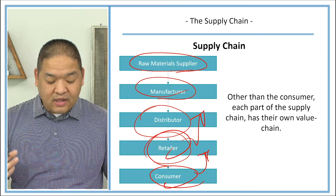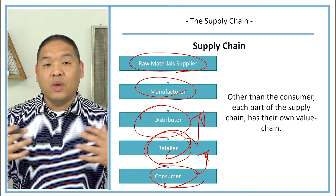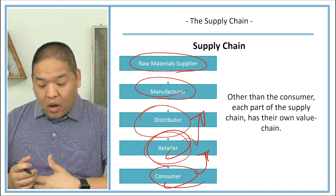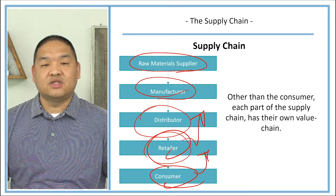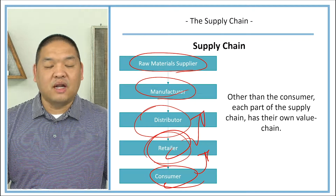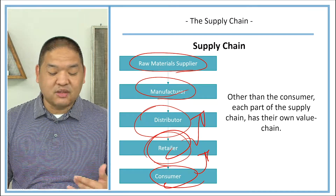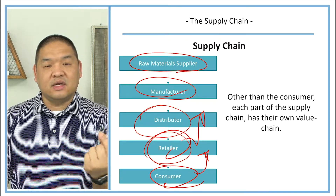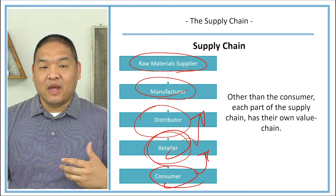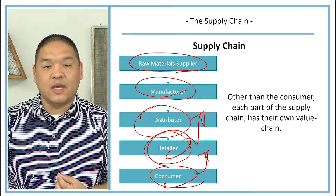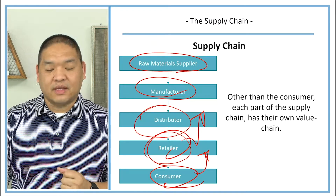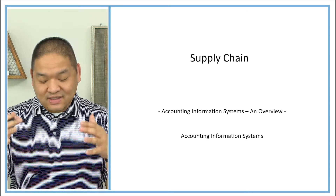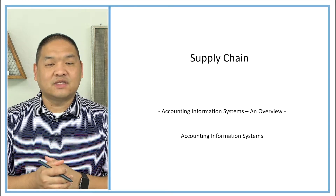When we think about how accounting information systems can affect the supply chain, we can provide the data, the connection, and the throughput for all of this information across the chain. Understanding the supply chain is important because we're going to see how we can connect our data with other entities to get the best information needed to make quick decisions within our organization.